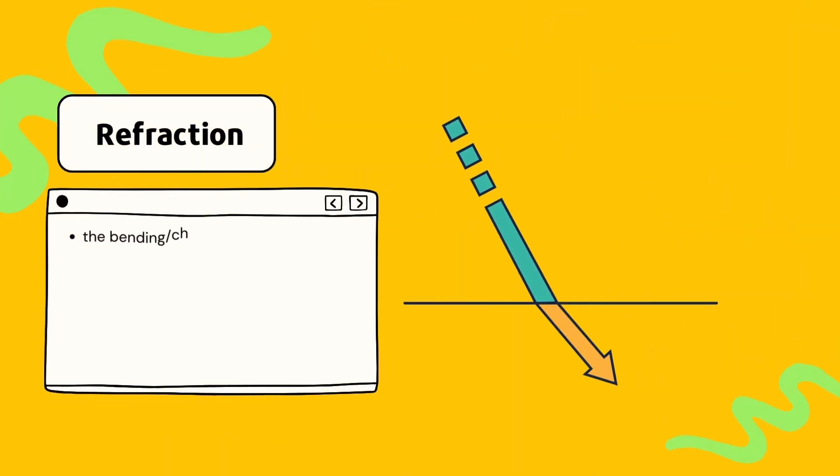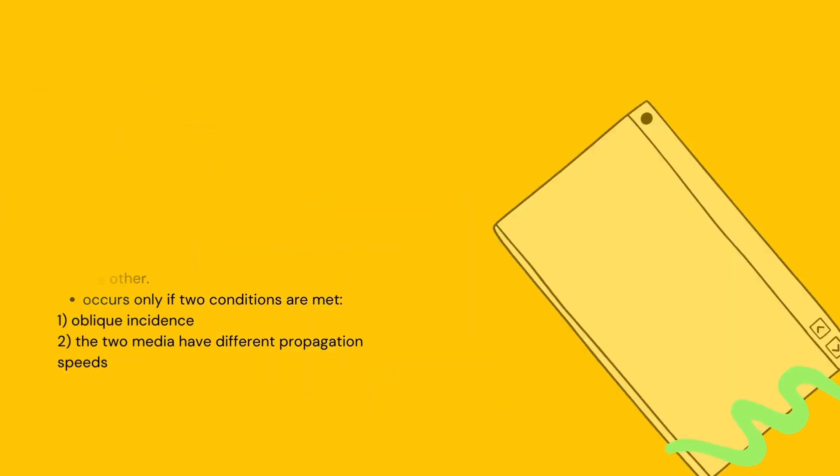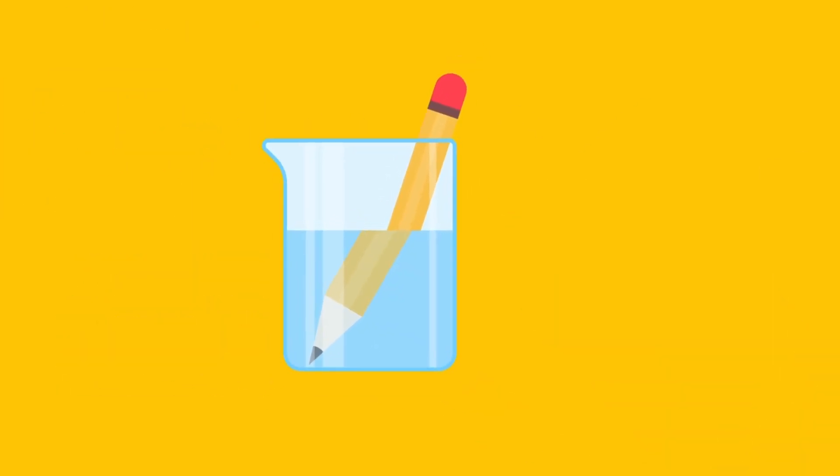Refraction is a fascinating phenomenon in ultrasound imaging that occurs when sound waves change direction as they pass from one medium to another. To understand refraction, let's use the classic example of a pencil in water. When you place a pencil in a glass of water, it appears bent at the point where it enters the water. This occurs because light waves change direction as they pass from air, a less dense medium, into the water, a denser medium. This bending of light waves is what is known as refraction.